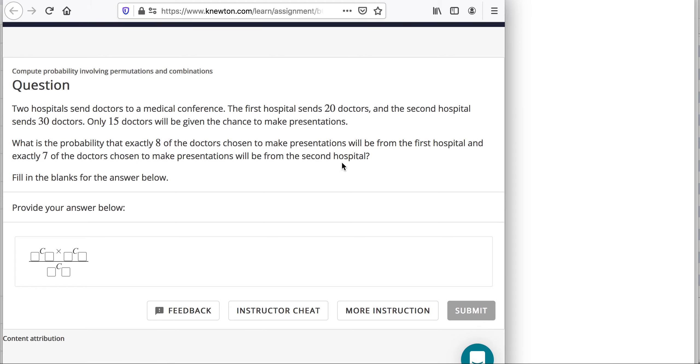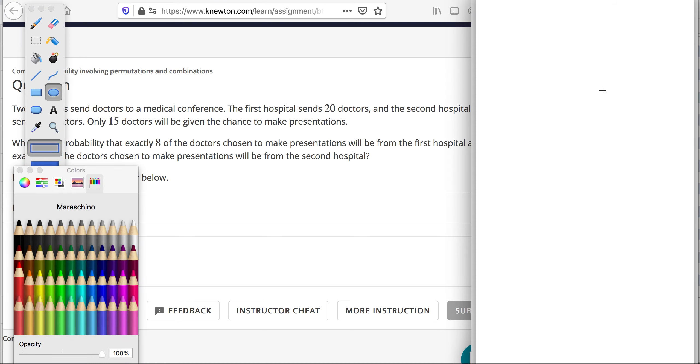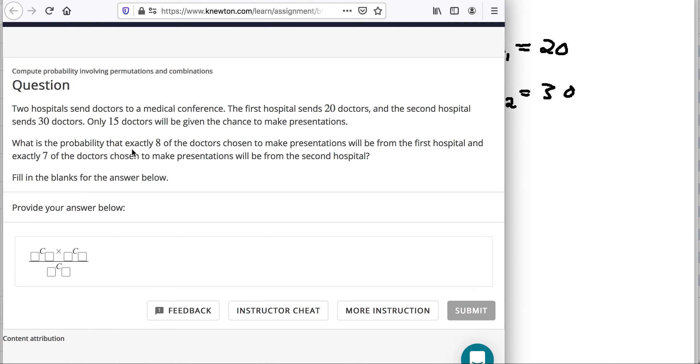Two hospitals send doctors to a medical conference. One hospital sends 20 doctors. The second hospital sends 30 doctors. So before I go on, I need to read all the other details. We're going to just jot down that N1 equals, first hospital sends 20, and N2 equals 30, because N is like the total number that we can choose from.